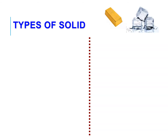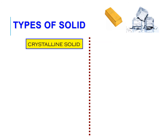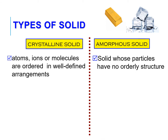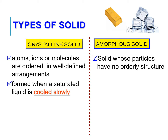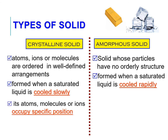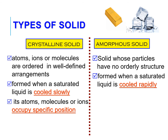There are two types of solid: crystalline solid and amorphous solid. Crystalline solid consists of atoms, ions, or molecules that are in a well-defined arrangement. Whereas amorphous solid is a solid whose particles have no orderly structure. Crystalline solid is formed when a saturated liquid is cooled slowly. Crystalline solid has its atoms, molecules, and ions occupy a specific position. Examples are ice, sugar, and salt.